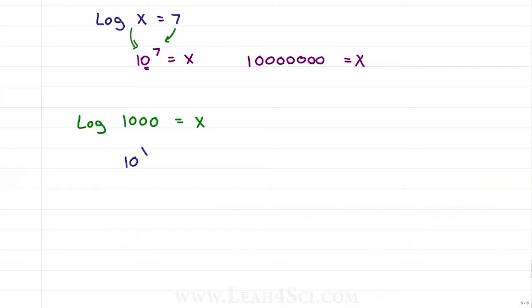With the imaginary base 10, we say 10 to the power of x equals 1000. 10 to what power equals a thousand? We use the decimal trick: count 1, 2, 3 — that's 10 to the power of 3. But the answer is not 10 to the third; x is simply equal to the exponent, meaning x equals 3.